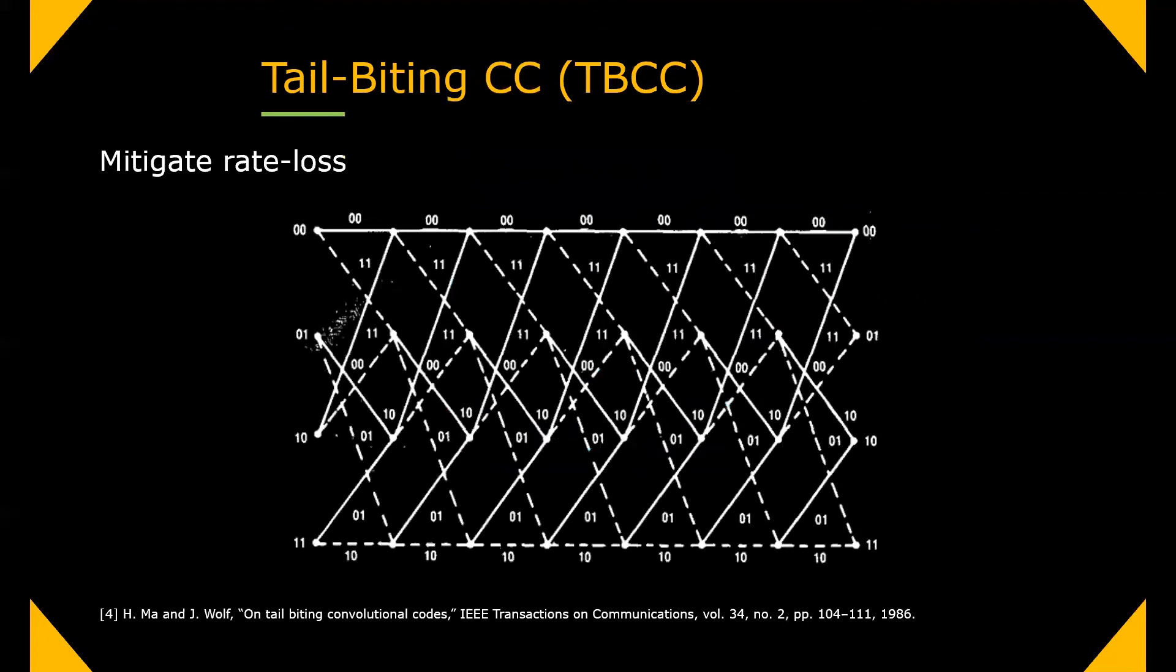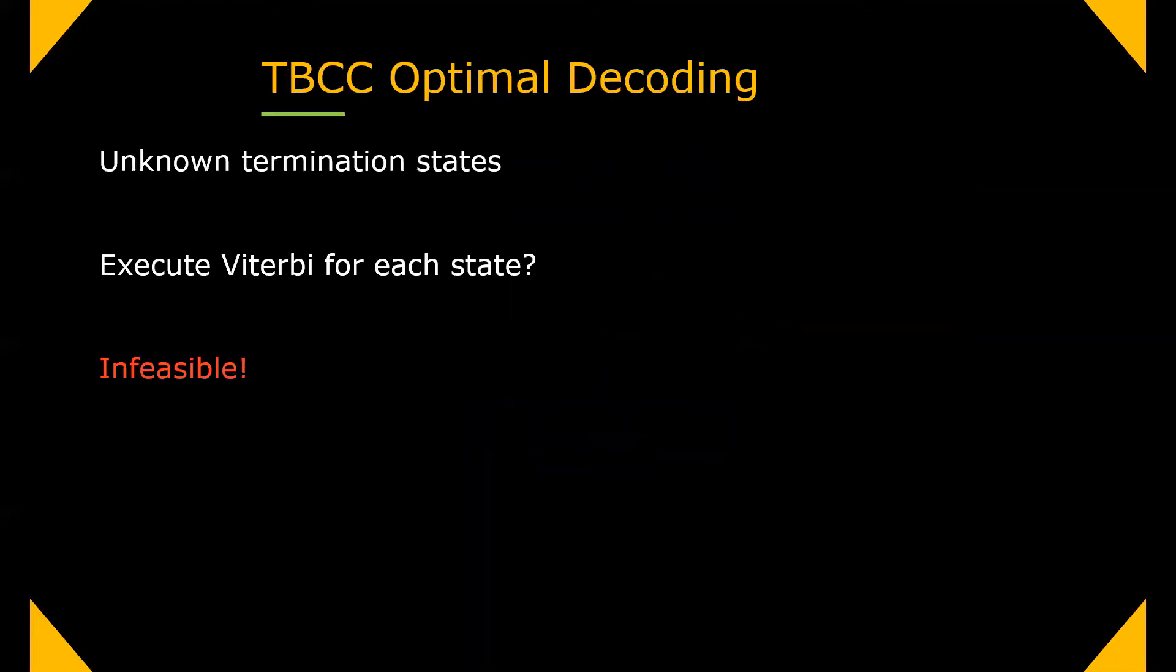So Tail-Biting CC, or TBCC in short, actually mitigates this rate loss by simply using the last bits of the info word to determine the start state. Now every start and end states are valid, the only constraint is on their equality. But now, following this scheme creates a new problem. We don't know the termination state for Viterbi, so one can actually ask how to decode.